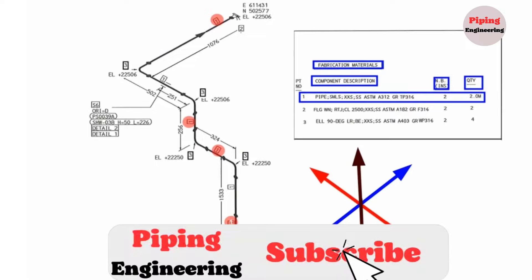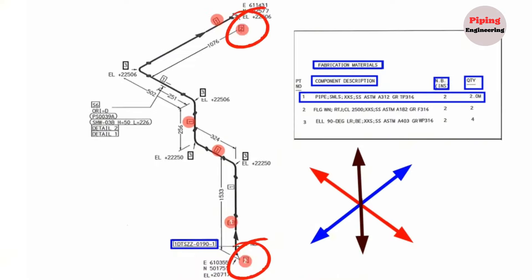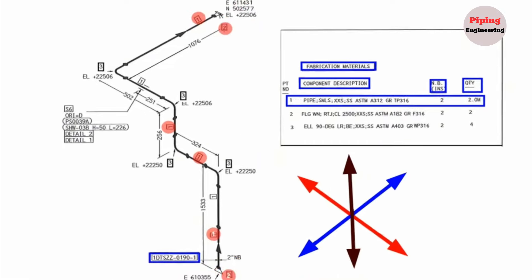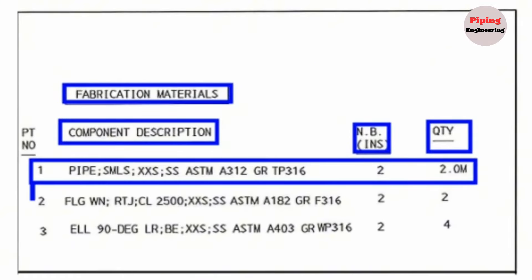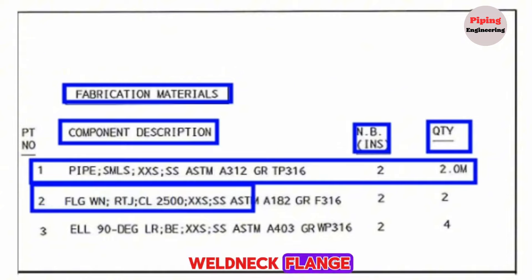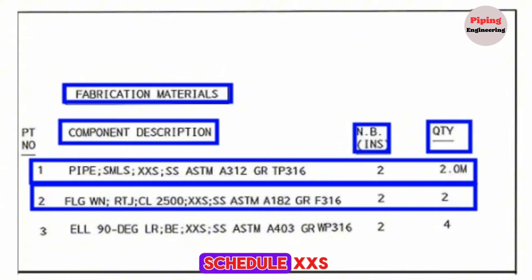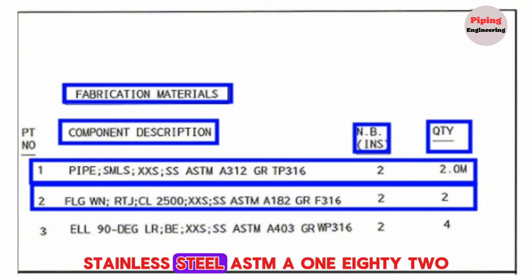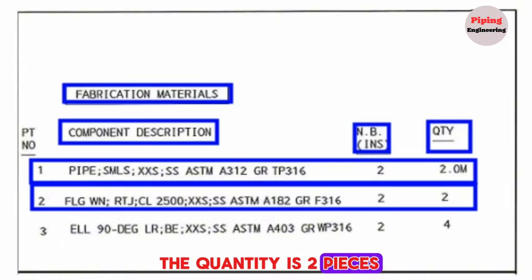Item number 2 is shown in two places on the pipe drawings. Looking at the fabrication materials list, item number 2 is Pipe, Seamless, Stainless Steel ASTM A182, Grade F316, size 2 inches, and the quantity is 2 pieces.